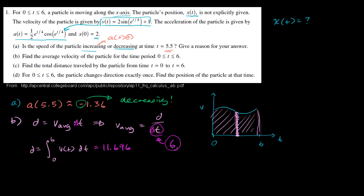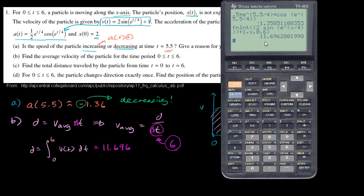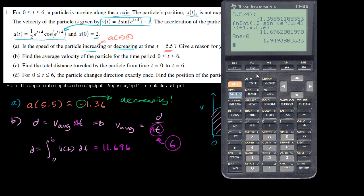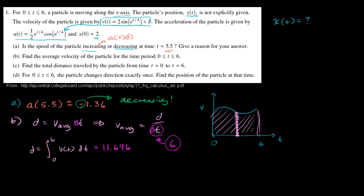We divide the total distance by the change in time. Our previous answer divided by 6 gives 1.949. So our average velocity is equal to 1.949. They didn't give us any units, so that's part b.